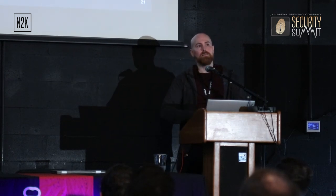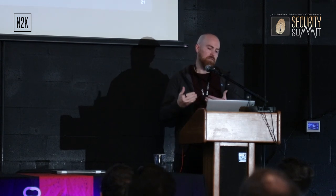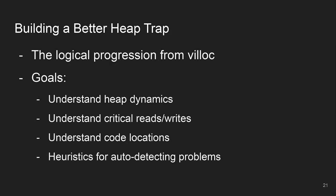So we talked about the tools we've seen, we liked what Vilek was doing but we want a few more things. The goals: fundamentally, understand heap dynamics in an intuitive way - it should just be obvious. I really want to understand the reads and the writes because that's the sort of stuff that leads to the allocator problems that Vilek shows well. I also need to understand code locations - it's one thing to say your heap buffer got overflowed, but it's not helpful if you can't tell me where that happens. And we also want heuristics - both programmatically to detect these things and visually, so we can train ourselves to see the problem quickly without thinking too much.